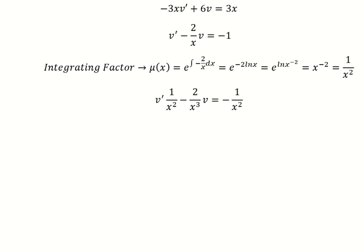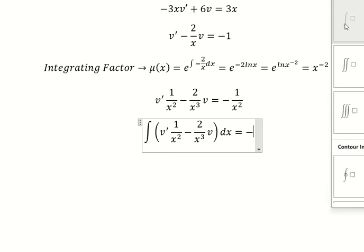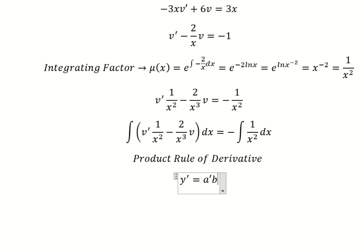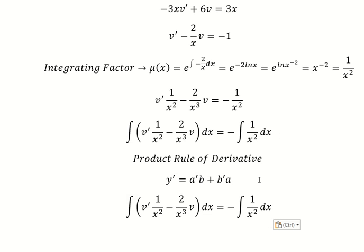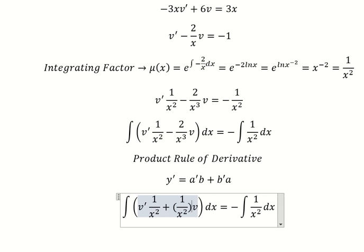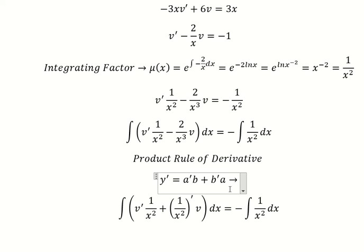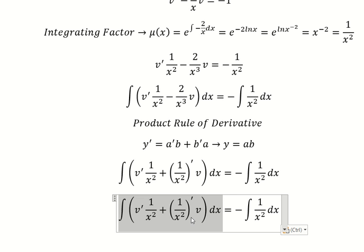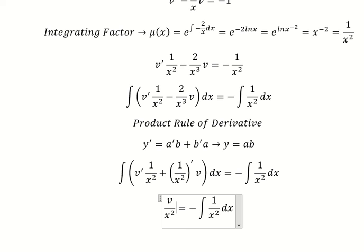We then multiply both sides by this integrating factor. Next, we integrate both sides. We can use the product rule of the derivative — the formula is: the first derivative of a multiplied by b, plus the first derivative of b multiplied by a. So the integration of the left side gives us v over x squared, and the right side gives us 1 over x, plus the constant c.